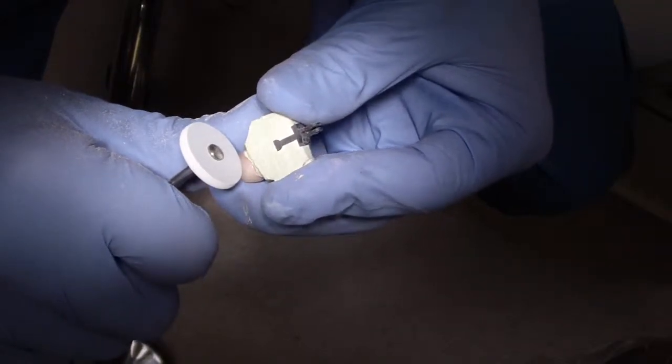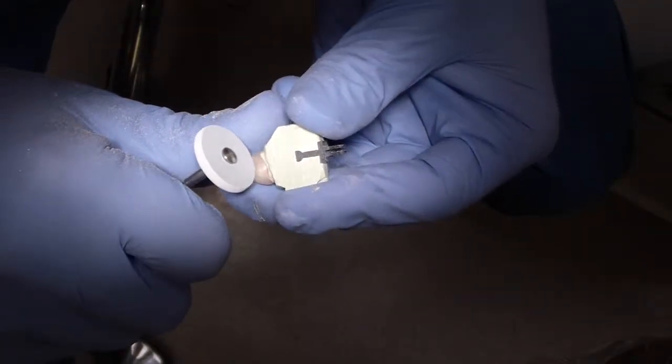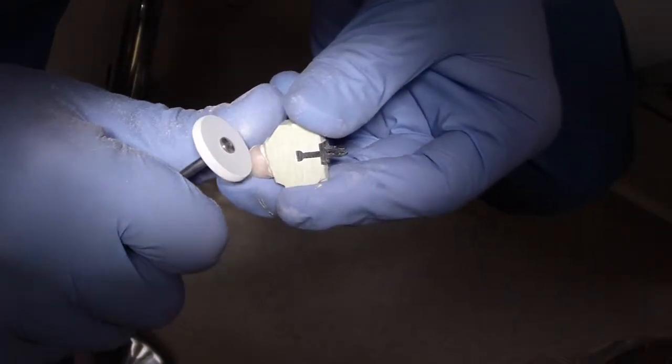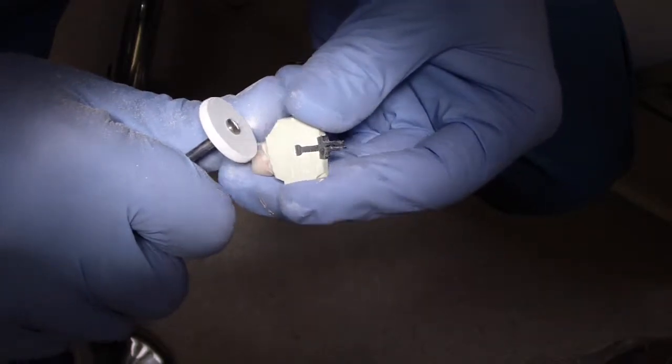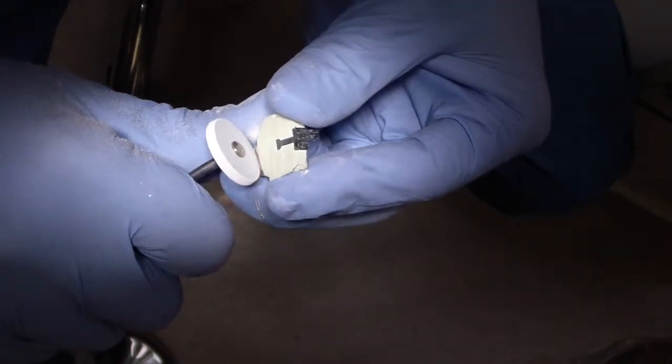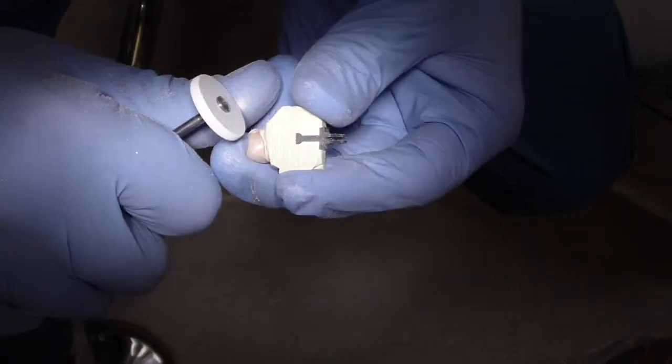I'm making sure I know where my contact area is, staying away from the contact area. I'll use this heatless wheel just to kind of get rid of the big scratches from the diamond that I was using. Still a little more to go with that.